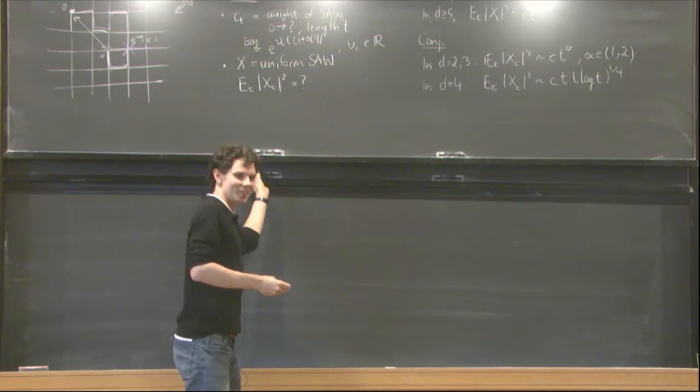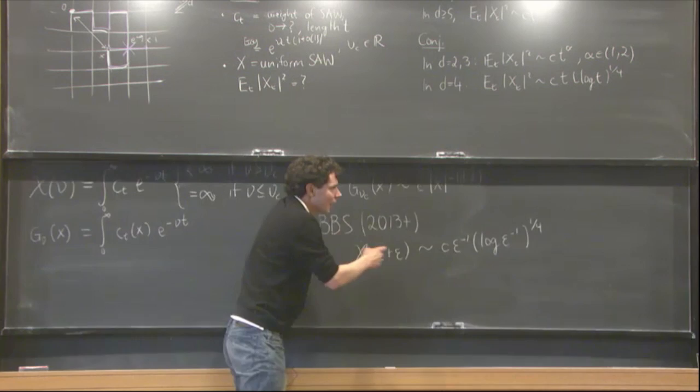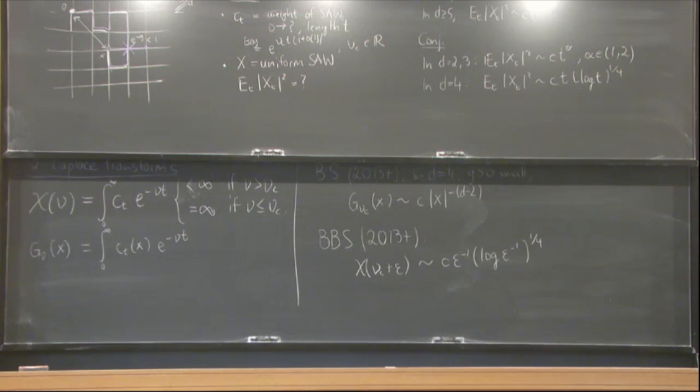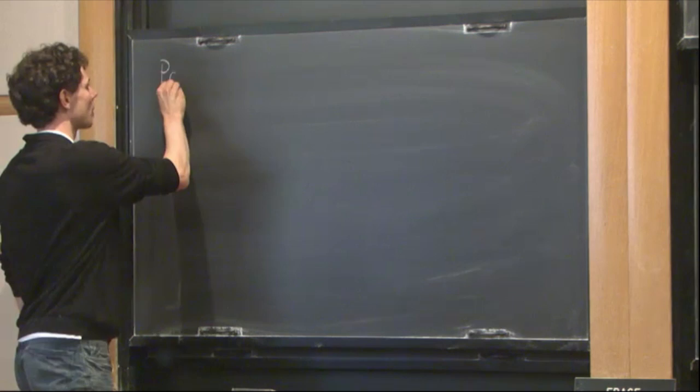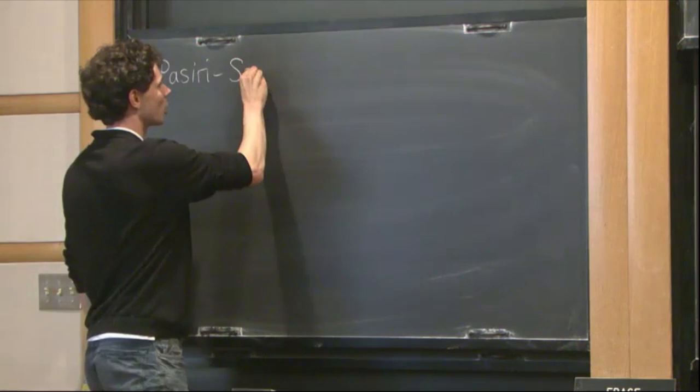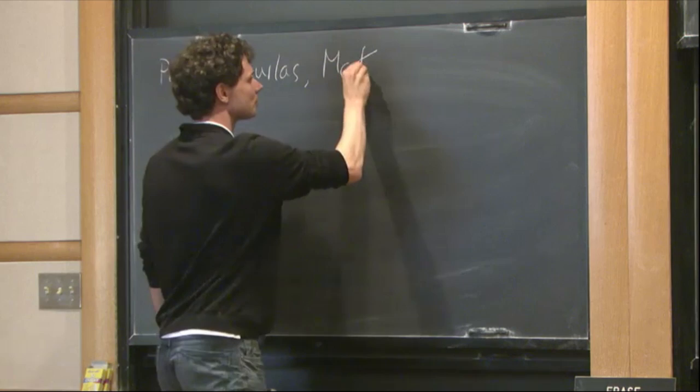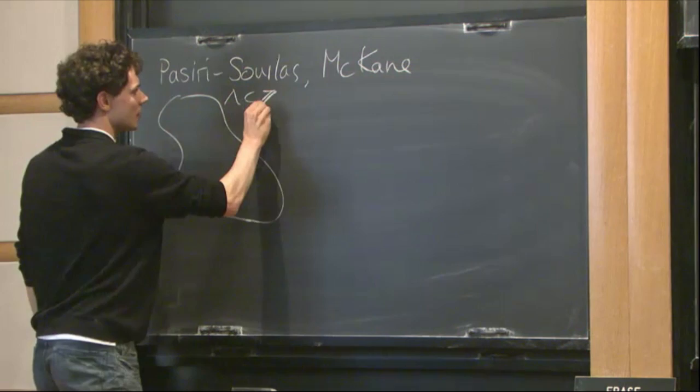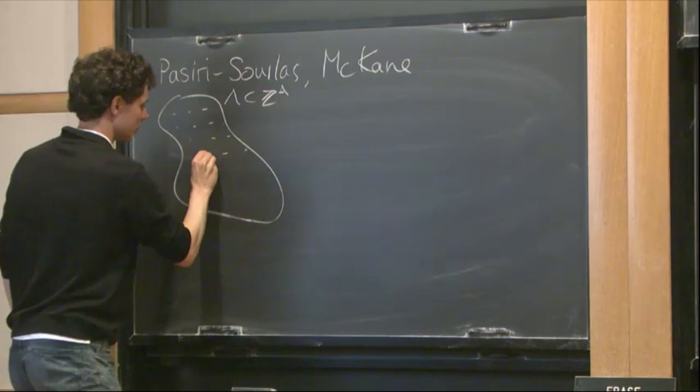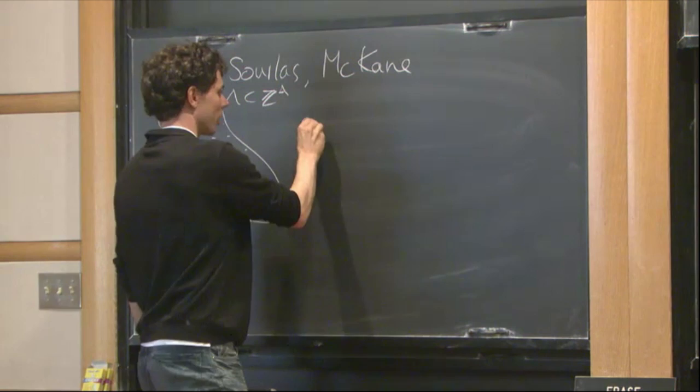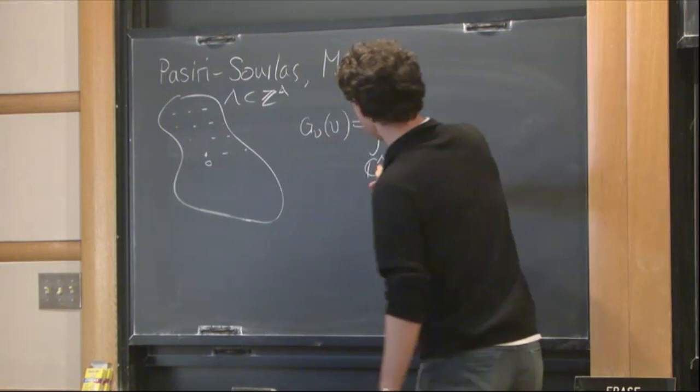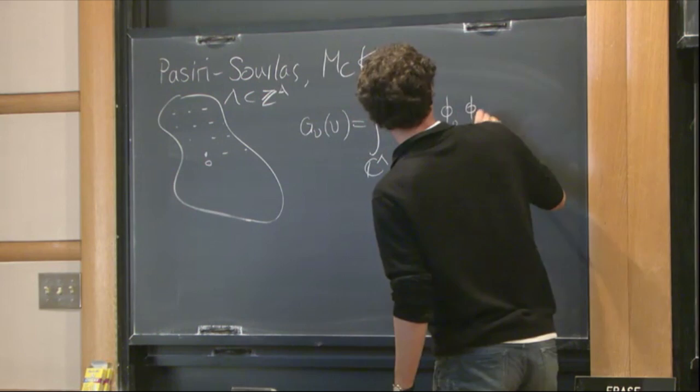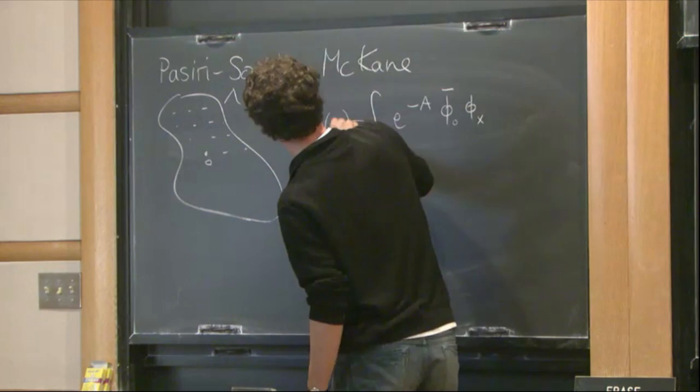So let me only say a starting point for this analysis, and that's an observation by physicists Parisi, Sorlas, and McCain in 1980, who noticed that if you look at self-avoiding walks on a finite set lambda in Z^D, that then there's an exact formula for the two-point function as an integral over a very high dimensional space, C^lambda, and it's of the form e^(-A) phi_0 phi_x. And I haven't said what A is. A is a differential form.